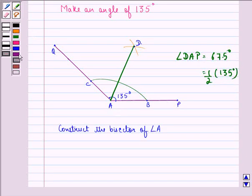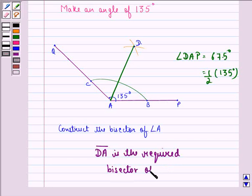Therefore, we can say that line segment DA is the required bisector of angle A. So, I hope that you understood the question and enjoyed the session. Have a good day.